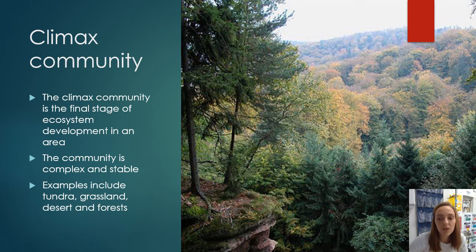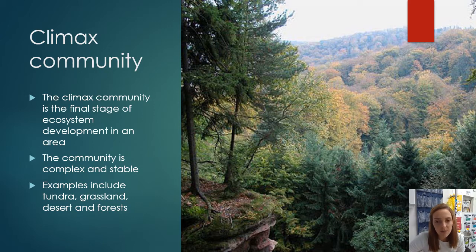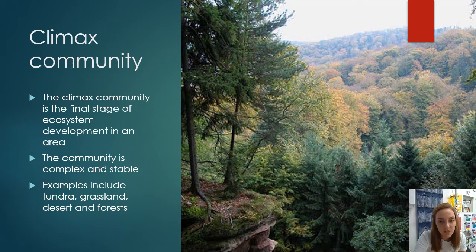The climax community represents the final stages of ecosystem development after a succession event. It's a really stable and diverse environment — complex, with a large number of different species across different strata all working together and interacting. Tundra, grassland, desert, and forest are generally considered climax communities when thriving. Even deserts can have climax communities, though you wouldn't expect as much biodiversity as you would in a rainforest.